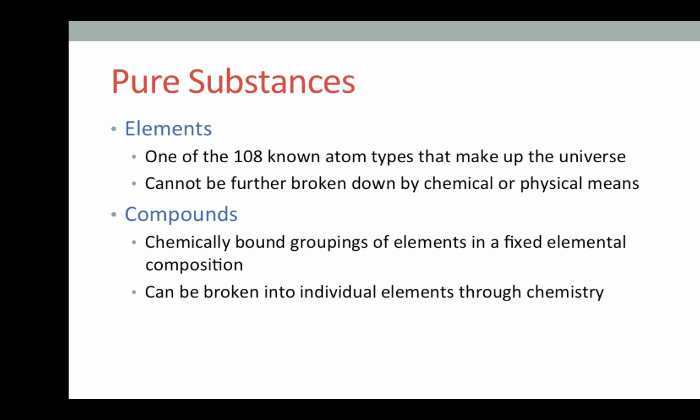So as I mentioned, a pure substance is either a pure element or a compound. There are 108 known types of elements that make up our universe, and they are all laid out on the periodic table. A single atom of an element cannot be broken down by chemical or physical means. Compounds, however, are chemically bonded groups of elements in a fixed elemental ratio, and they can be separated down to individual elements through chemistry. Examples of elements are things like helium,